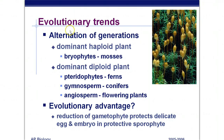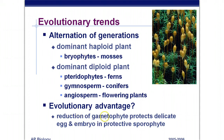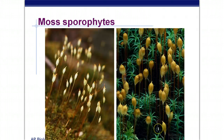You should already have this in your notes. Remember that alternation of generations — the only one that has a dominant haploid plant — that's the gametophyte, which is the green stuff on bryophytes, the mosses. The pteridophytes, gymnosperms, and angiosperms all have a dominant diploid plant, which is all the trees that you see out there. Remember, if it's really close to the ground, it's probably a bryophyte, and chances are you're looking at the haploid plant. Evolutionary advantage: the reduction of the gametophyte protects the delicate egg and embryo in a protective sporophyte. The sporophyte is dependent on the gametophyte in bryophytes like mosses.